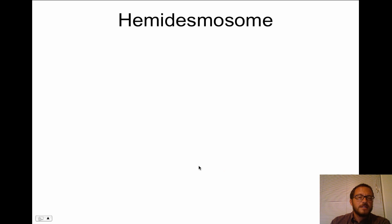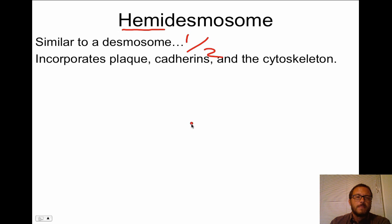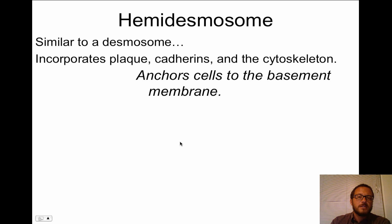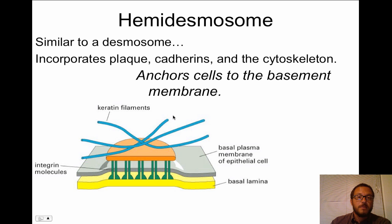The next junction is called a hemidesmosome — you can probably guess that it's half a desmosome. It similarly incorporates plaque, cadherins, and the cytoskeleton, but it's only anchoring cells to the basement membrane — found only on the bottom of basal cells. We see keratin filaments, the plaque, and glycoproteins extending into the basal lamina, which is part of the basement membrane secreted by the basal surface of the epithelium.